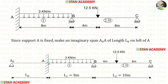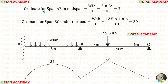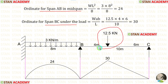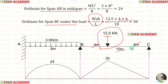Now let us take the spans AB and BC and make the second equation. We have already made the ordinate for span AB. Now let us make the ordinate for BC. In span BC, there is an eccentric point load. The formula to find the maximum bending moment under the load is WAB/L. Here W is 12.5, A is 4, B is 6, and L is 10. Finally, we are getting 30.